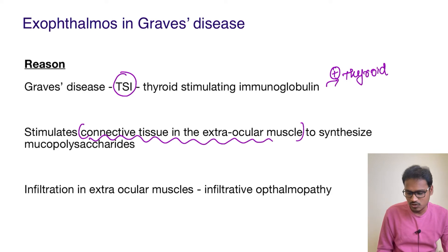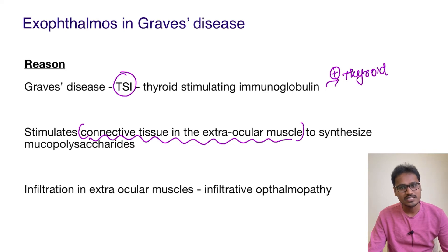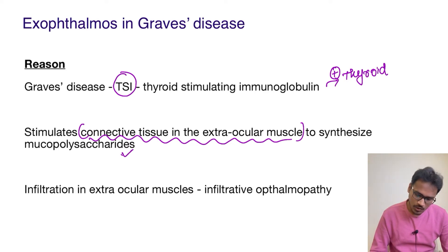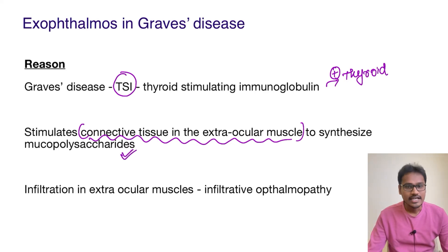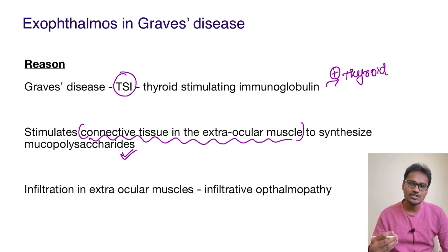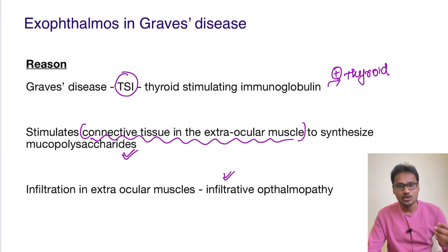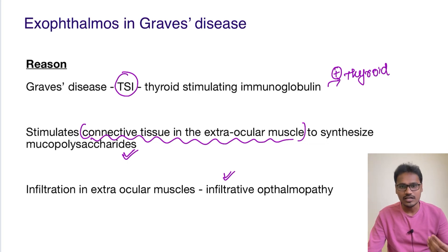This is the most important reason: TSI stimulates the connective tissues in the extraocular muscles to produce a specific substance called mucopolysaccharides. There will be accumulation of mucopolysaccharides in these extraocular muscles, leading to infiltrative ophthalmopathy. This accumulation of mucopolysaccharides behind the eye causes protrusion of the eyeball, resulting in exophthalmos in Graves' disease.